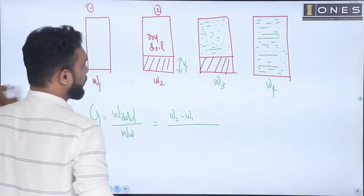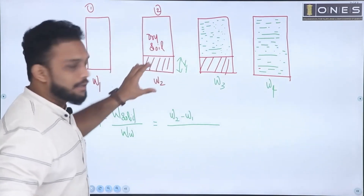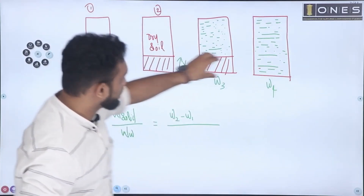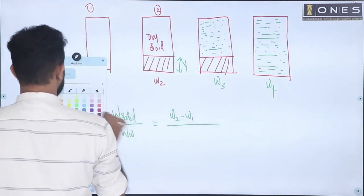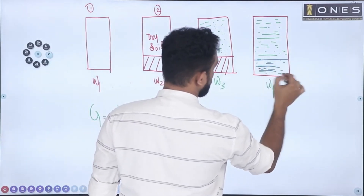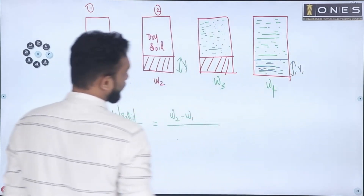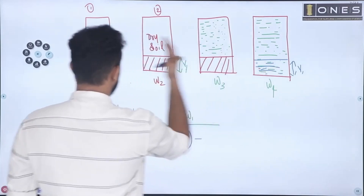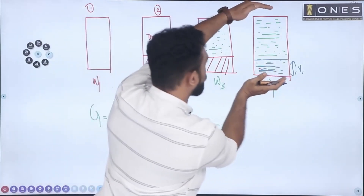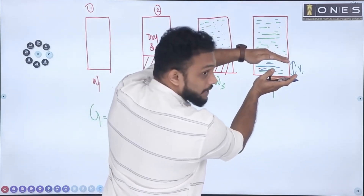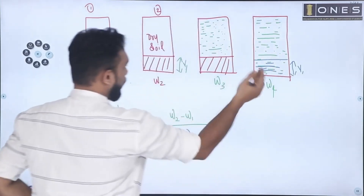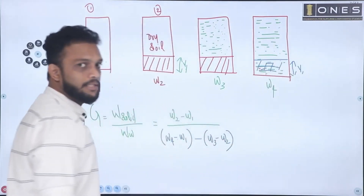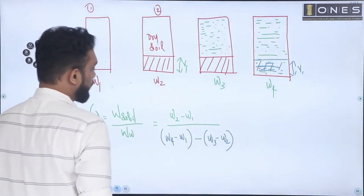The volume of the soil is not directly available. The volume of water corresponding to the same volume as the soil is found using the pycnometer readings. The weight of water filling the full pycnometer is W4 minus W1. The shaded portion of water displaced by soil is W3 minus W2. So the corresponding weight of the same volume of water is (W4 minus W1) minus (W3 minus W2).